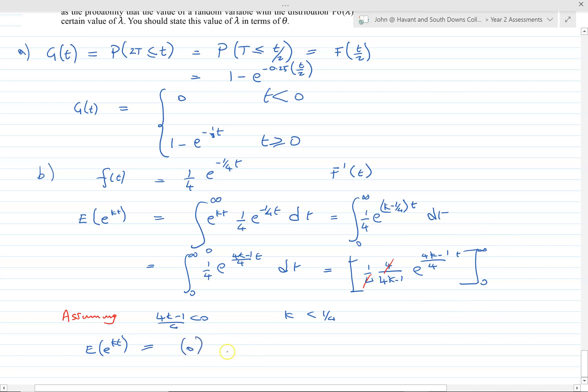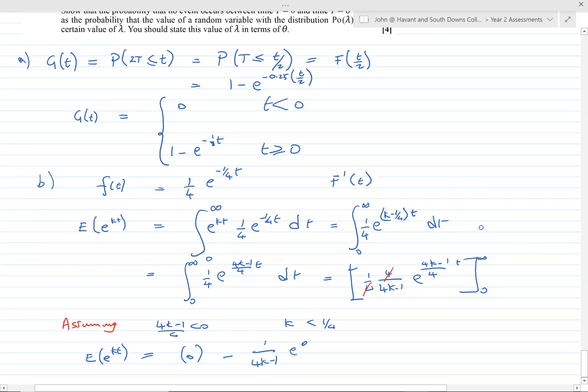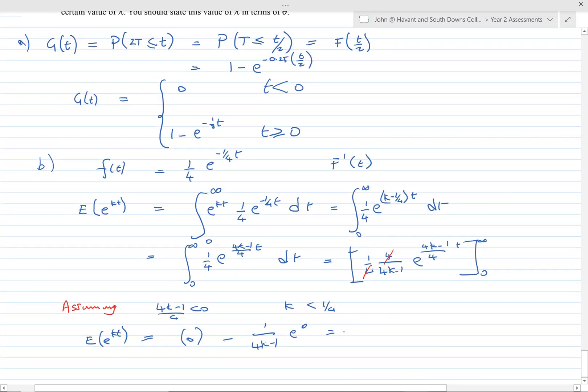Take away 0 into our value of t here, so that's minus 1 over 4k minus 1, e to the 0, so that comes to minus 1 over 4k minus 1, which of course is equal to 1 over 1 minus 4k. Just change it, get it with a negative on top and bottom. So we've also got k less than 1/4 as valid. That's part B.